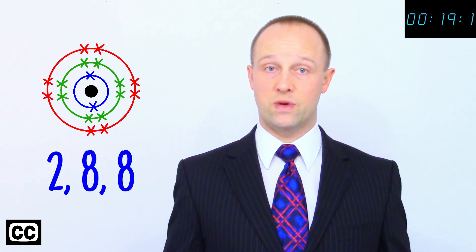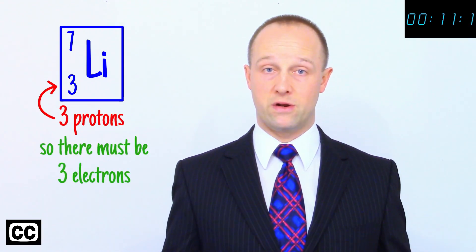You fill orbits from the center closest to the nucleus moving out. We normally draw the electrons in pairs in orbits two and three just to make them easier to count. We know how many electrons we need to add because the number of electrons is always the same as the number of protons, which we can get from the periodic table entry.